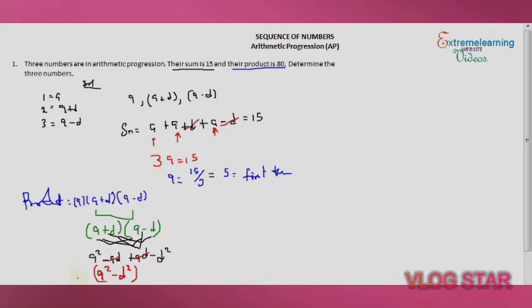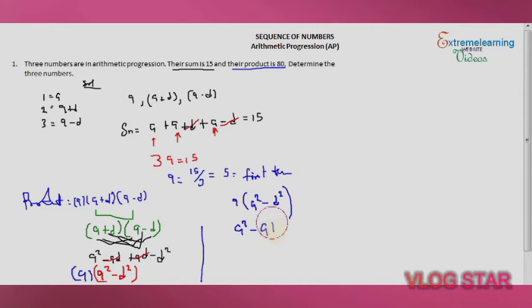Now multiply through by a: a times (a squared minus d squared) gives a cubed minus a times d squared. This equals 80. So we have a cubed minus a d squared equals 80. Now recall that we already solved for a and found that a equals 5.